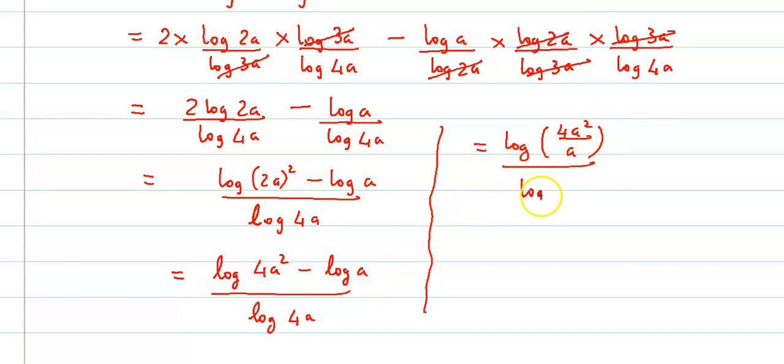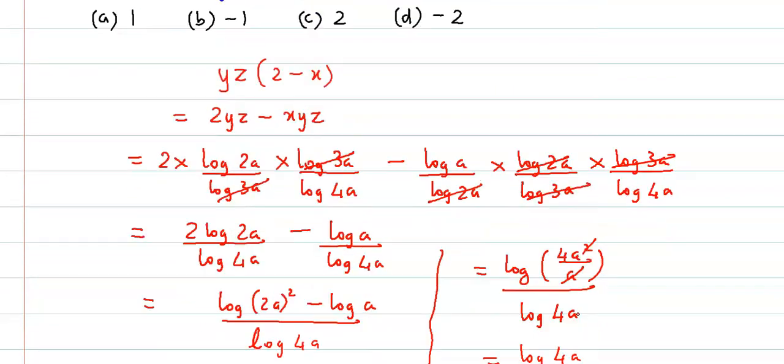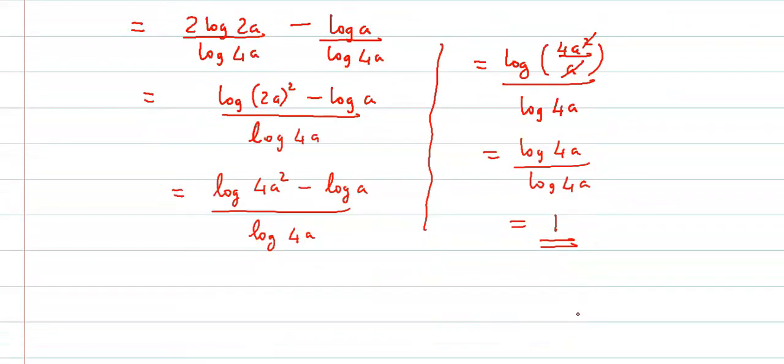Upon the denominator we have log of 4a. a and a cancel out, so we have log of 4a divided by log of 4a. So the value is 1, and checking the options, the correct answer is option a.